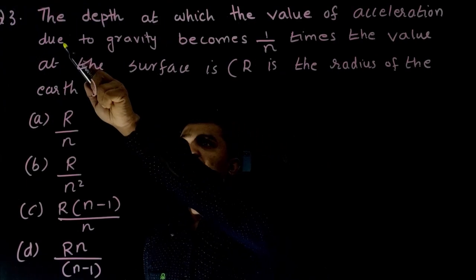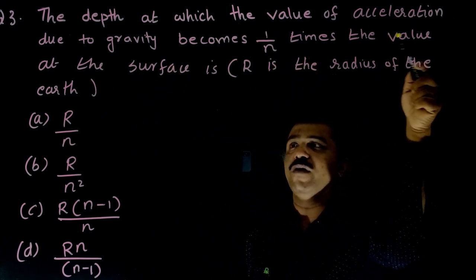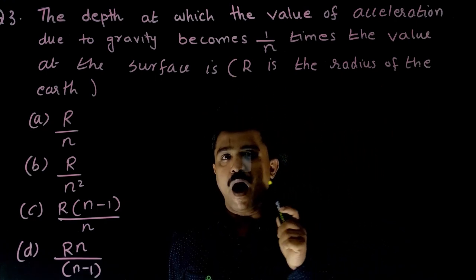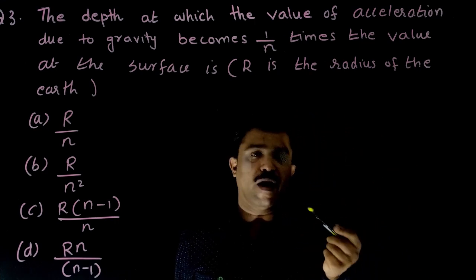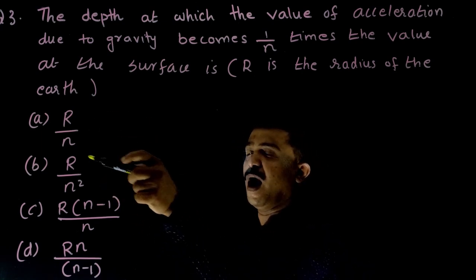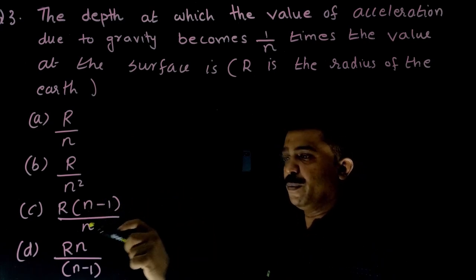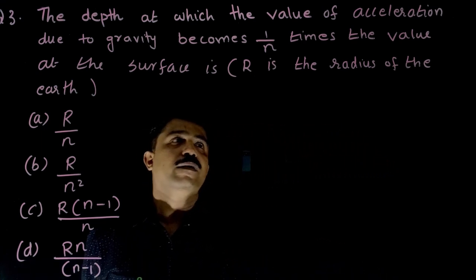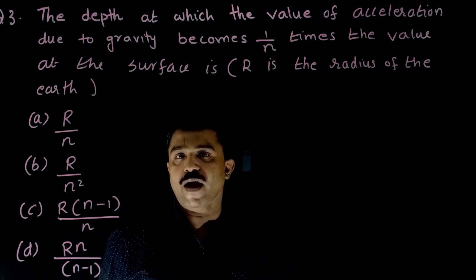Question 3: The depth at which the value of acceleration due to gravity becomes 1/n times the value at the surface, where R is the radius of the earth. Options: A) R/n, B) R/n², C) R(n−1)/n, D) Rn/(n−1).